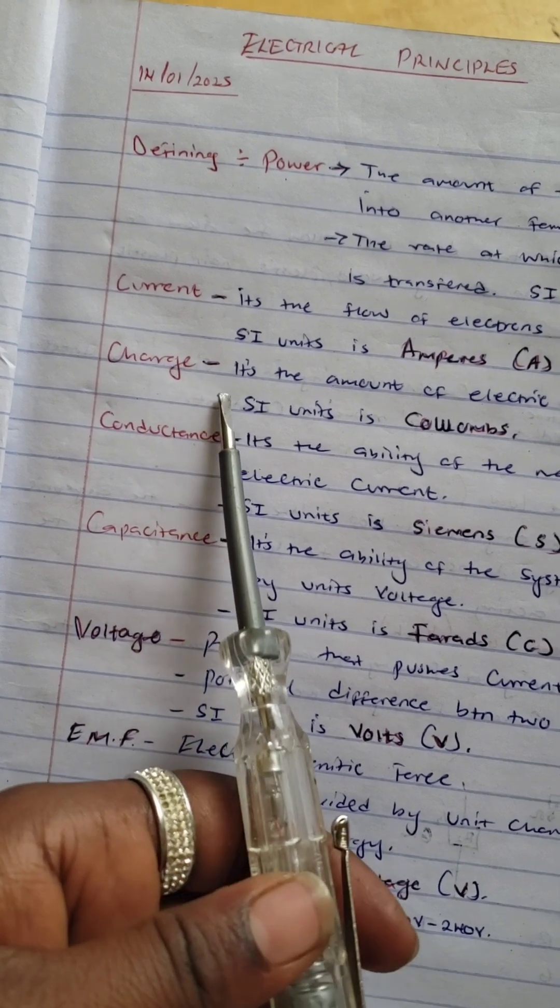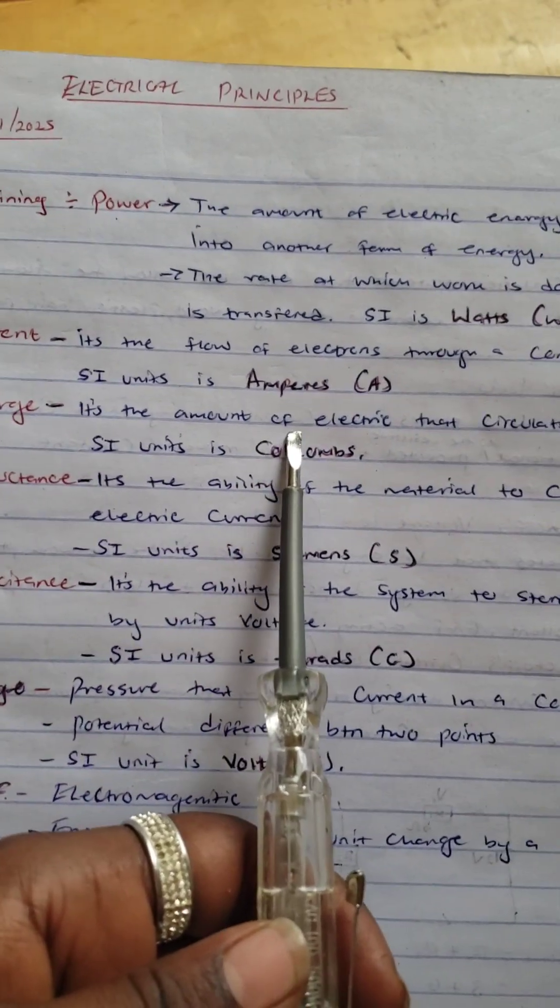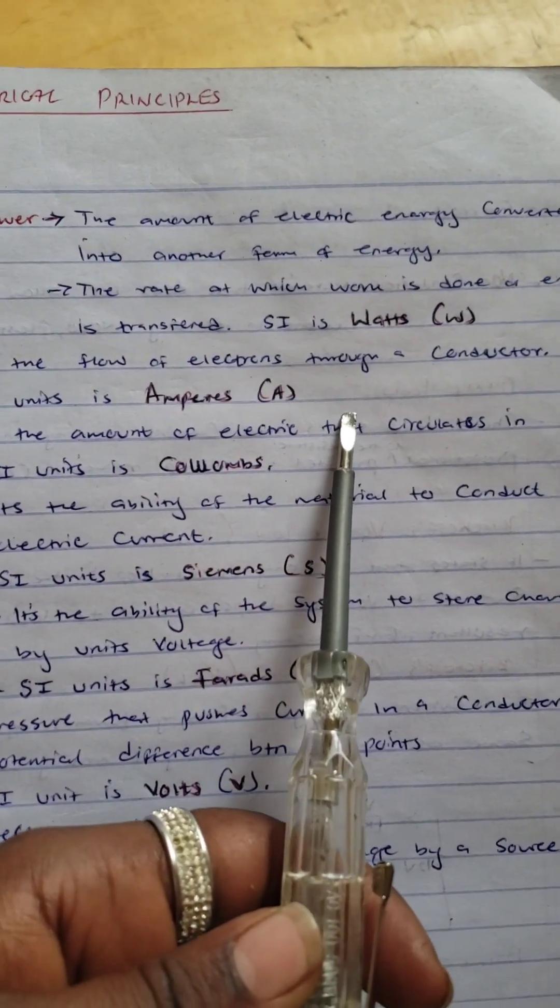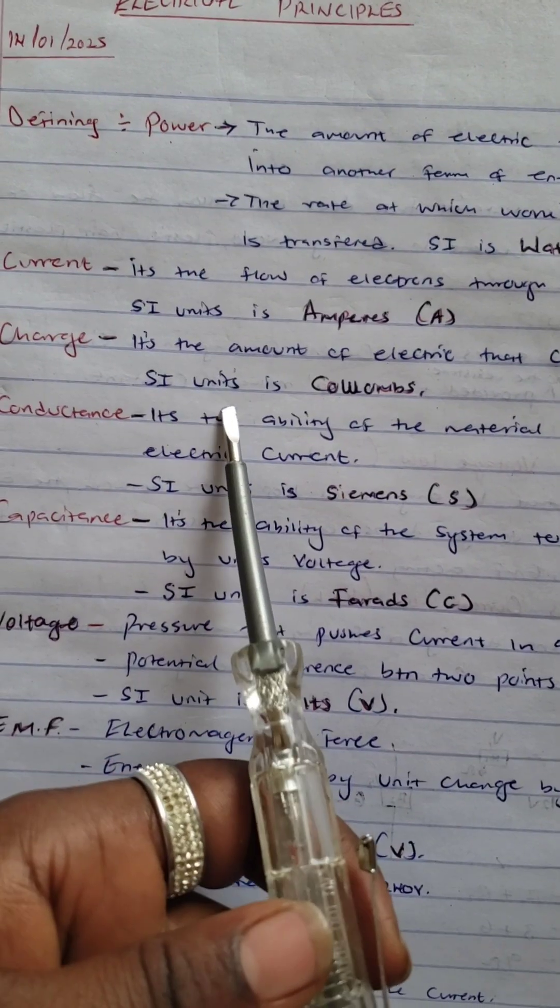Let's define charge. Charge is the amount of electric that circulates in. The SI unit is coulombs.